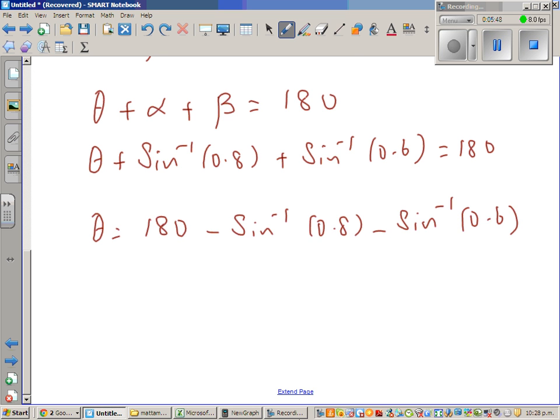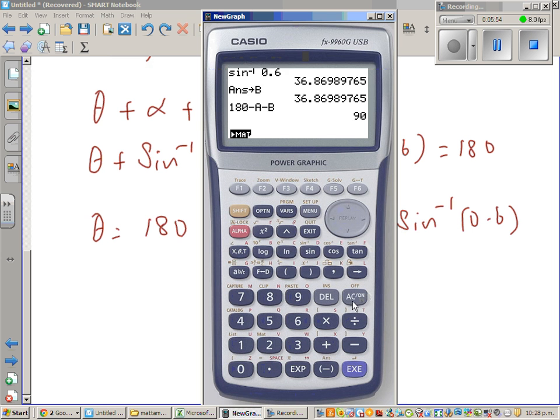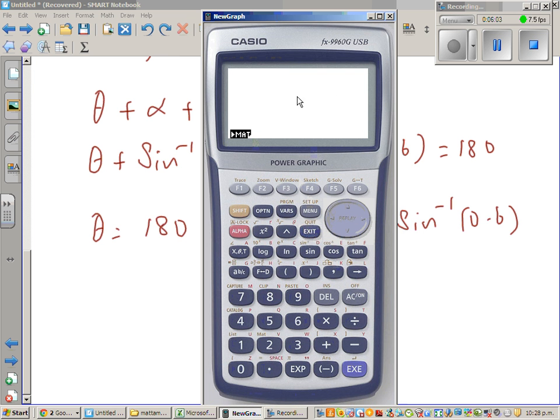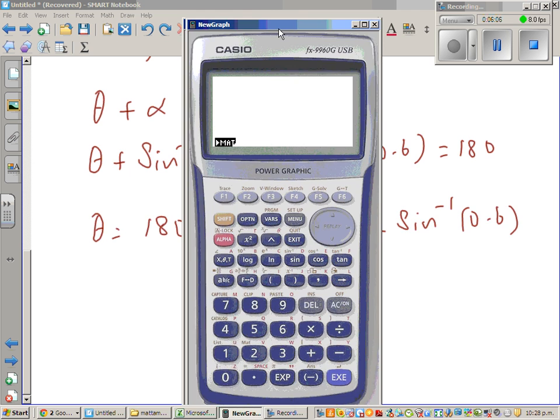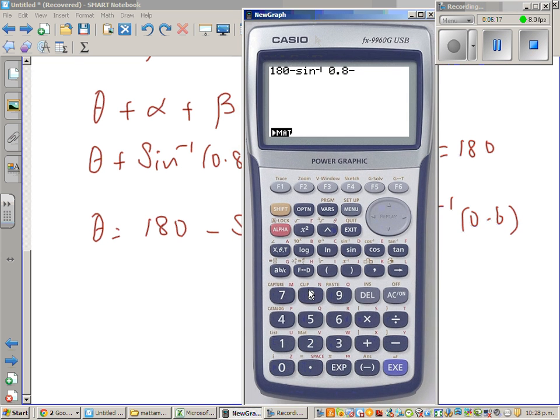So let me use a calculator. This is my calculator. I have already worked that out, but I'll show you. First, you have to have your setting, your angle in degrees, and then I'll go like this. So I know this is 180 minus shift sine of 0.8 minus shift sine of 0.6.